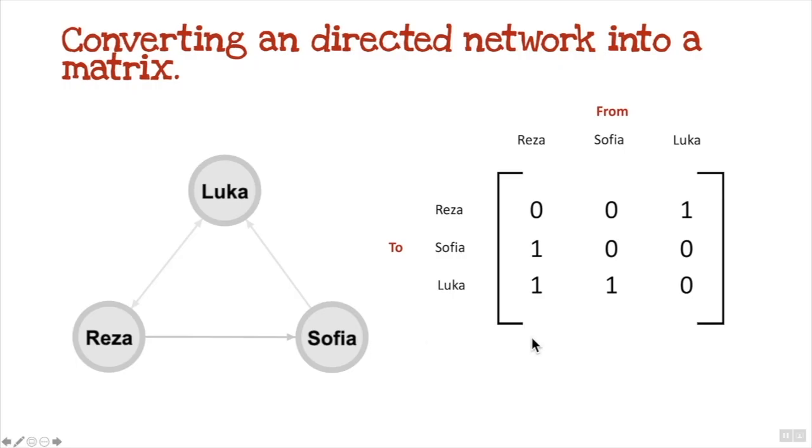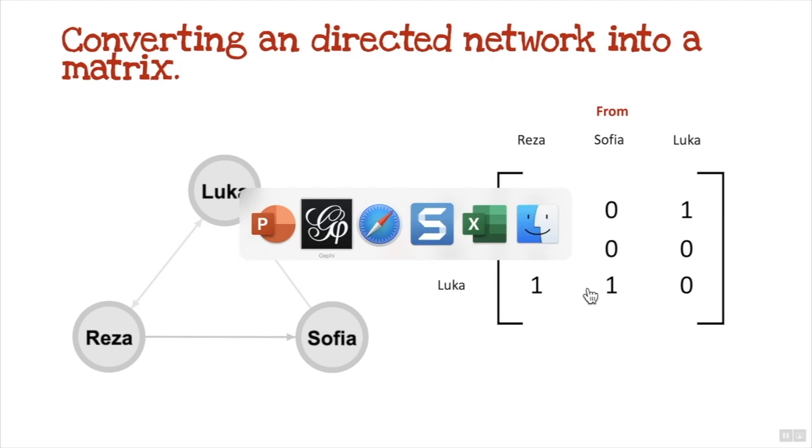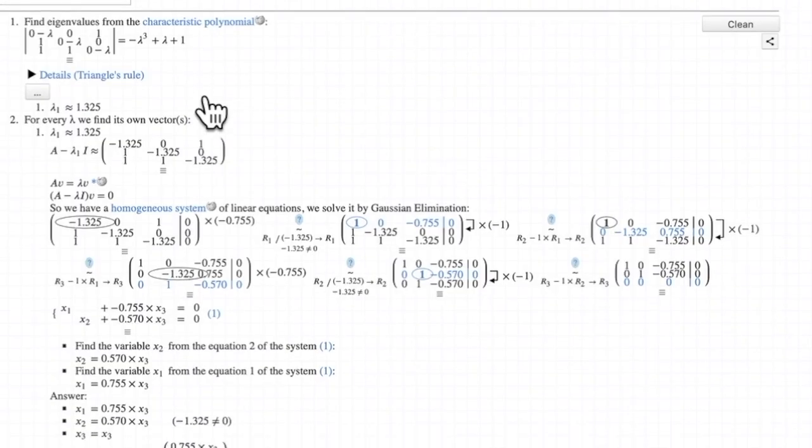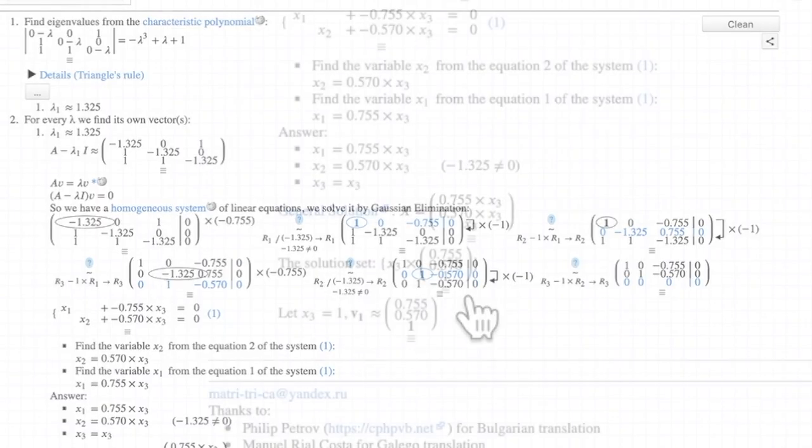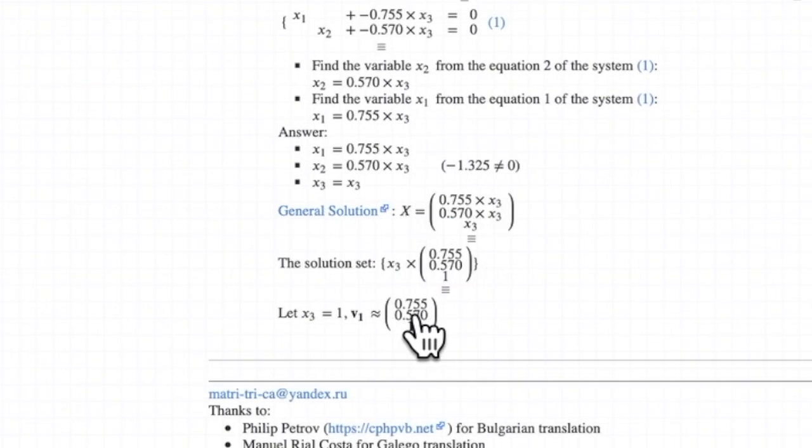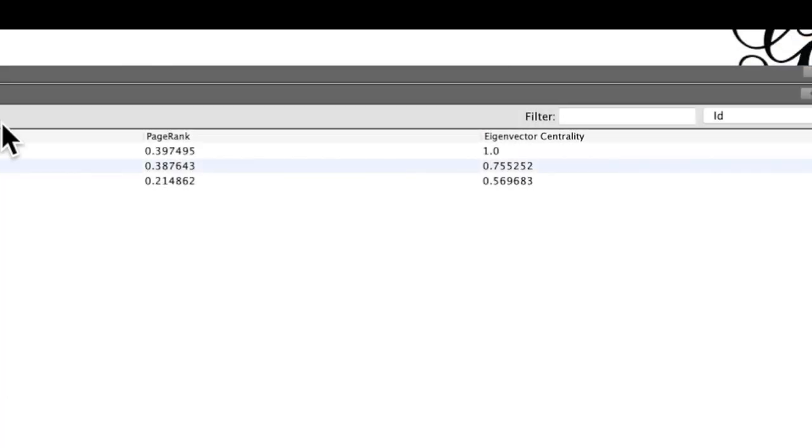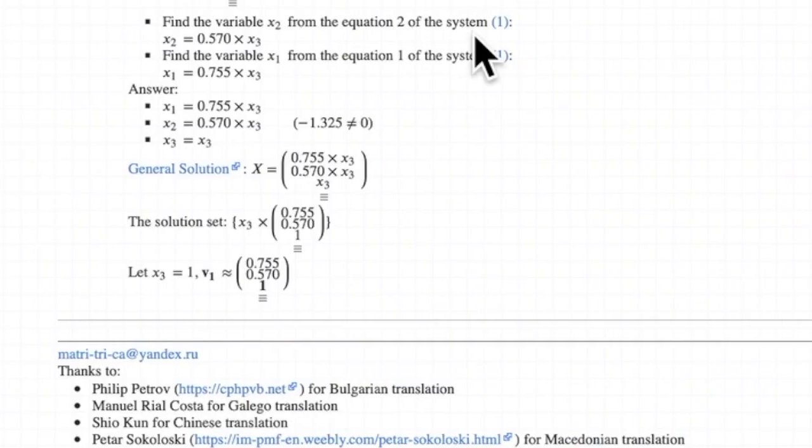If we go to our example and I change that to zero and zero, and I'll just close that down and find... First of all it finds the eigenvalues and then it calculates the eigenvectors, which in this case is 0.755, 0.570, and 1. If we go to our Gephi and have a look, we got 0.755 which was Reza the first one, Sofia is 0.57, and then one for Luka at the top. That's how the eigenvectors are calculated.